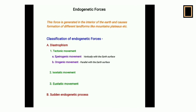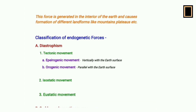Endogenetic forces are processes where the energy always comes from the earth's interior and causes the formation of new landforms over the earth's surface — maybe mountains, maybe plateaus. For example, magma or volcanism: when magma erupts, it forms a new volcano over the earth's surface, which is a newly formed landform created due to volcanic eruptions.